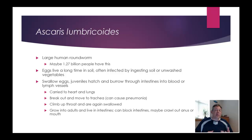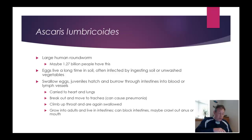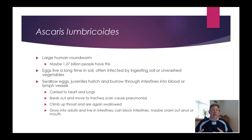There are lots of examples of these. The large human round worm — potentially 1.27 billion people are infected with it. The eggs live in the soil and can survive a long time there — they're very tough. Infection is transferred to a human by ingesting the eggs, ingesting soil, or maybe unwashed vegetables. This often has to do with poor sanitation: if human feces contacts the ground and the humans are infected, the eggs get transferred to another human.